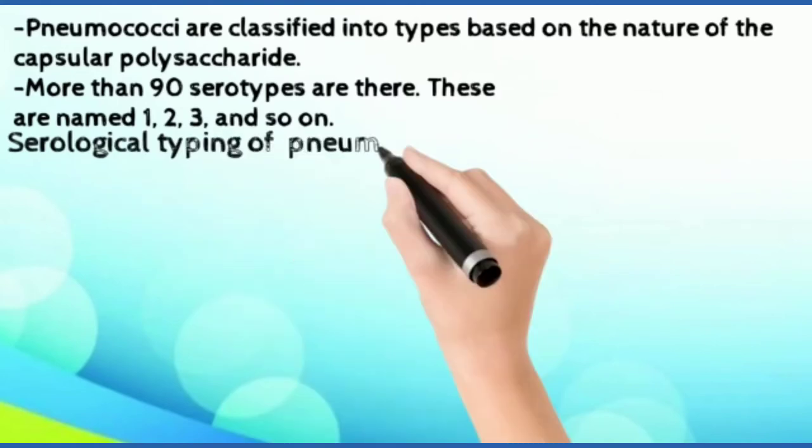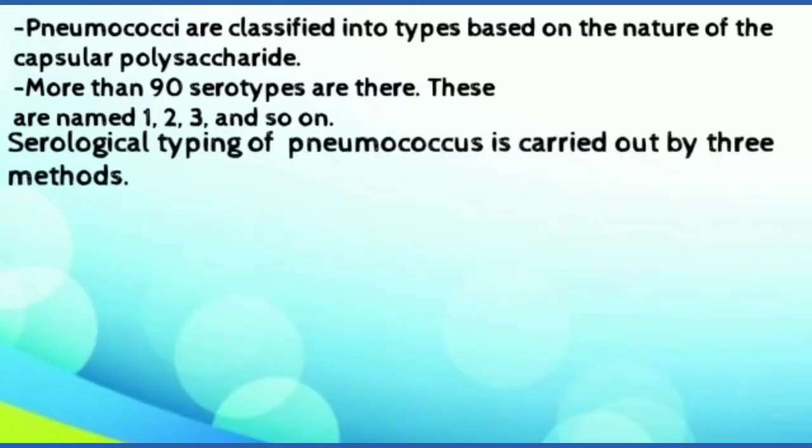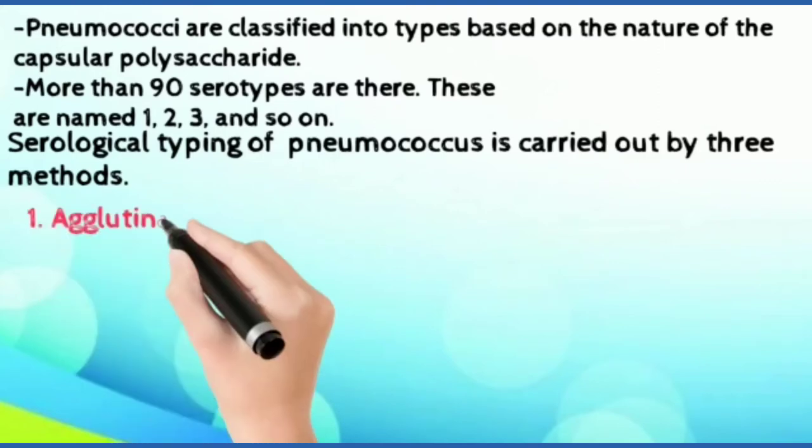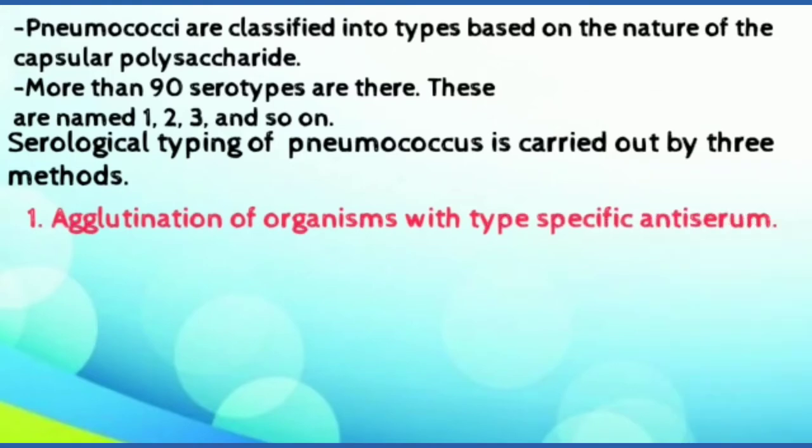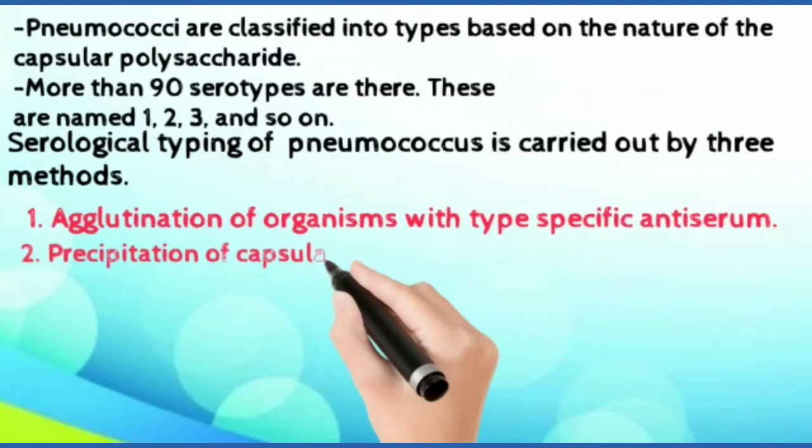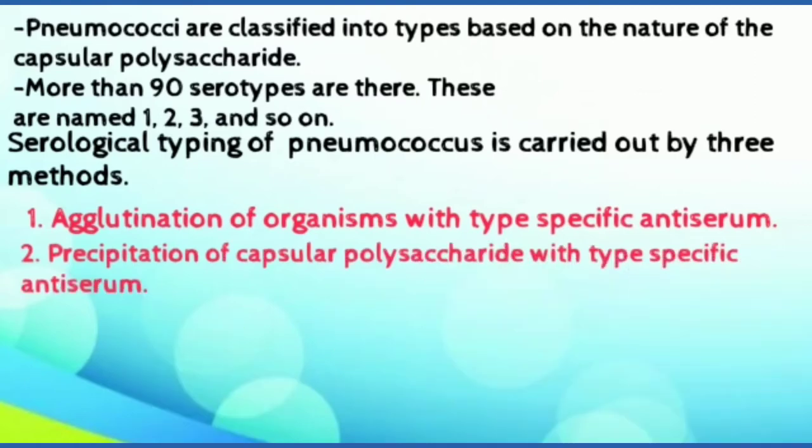Serological typing of pneumococci is carried out by three methods. First is agglutination of organisms with type-specific antiserum. Then precipitation of capsular polysaccharide with type-specific antiserum. Third is quelling reaction.